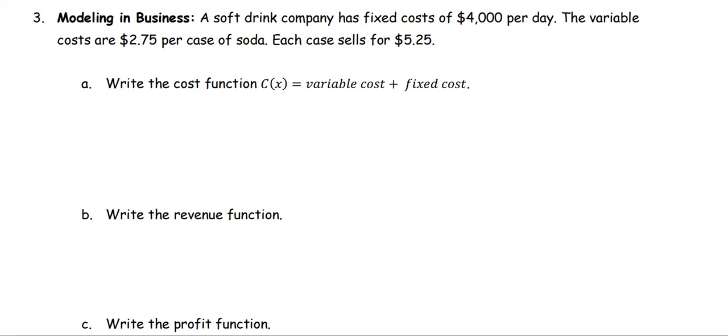We're going to write the cost function. The cost function C(x) is the variable cost plus the fixed cost. From the information we have, the fixed cost is $4,000 and the variable cost is $2.75 per case of soda. We can put this together as C(x) equals the variable, which is $2.75 per case, multiplied by x, plus the fixed cost of $4,000.